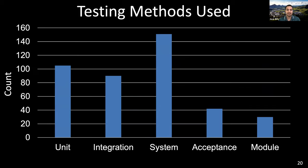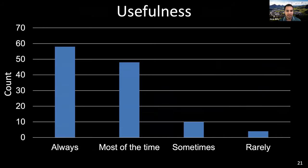We asked respondents about their usage of testing methods. System testing is the most popular one in research software development, and many respondents mentioned unit and integration testing as well. In terms of usefulness of testing, almost all respondents mentioned testing was useful always or most of the time. Only a few mentioned sometimes or rarely, and no one mentioned never.